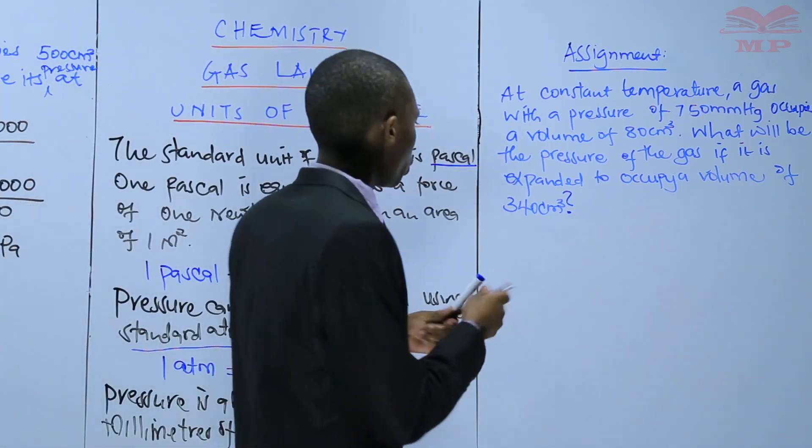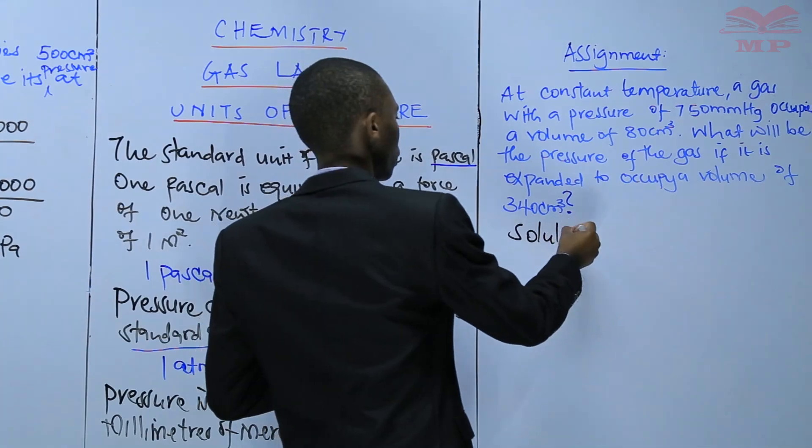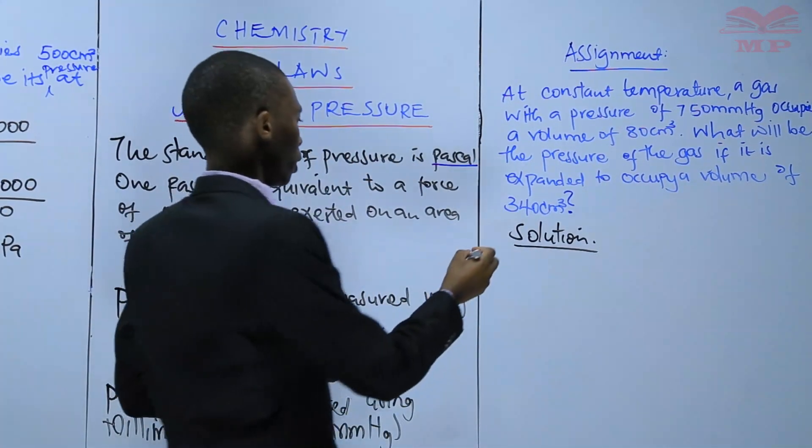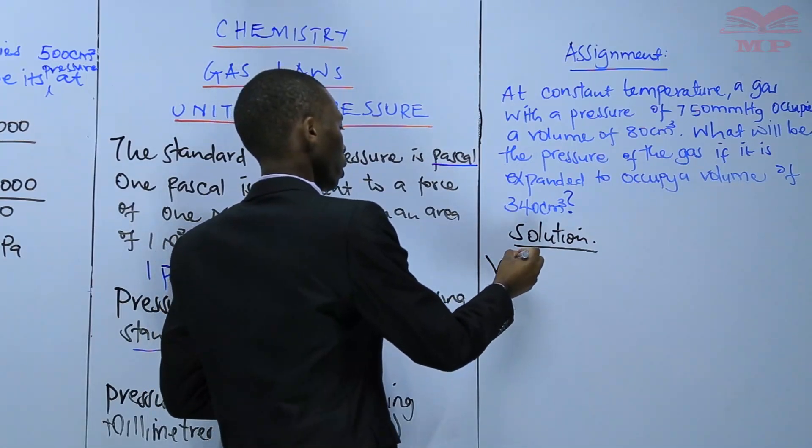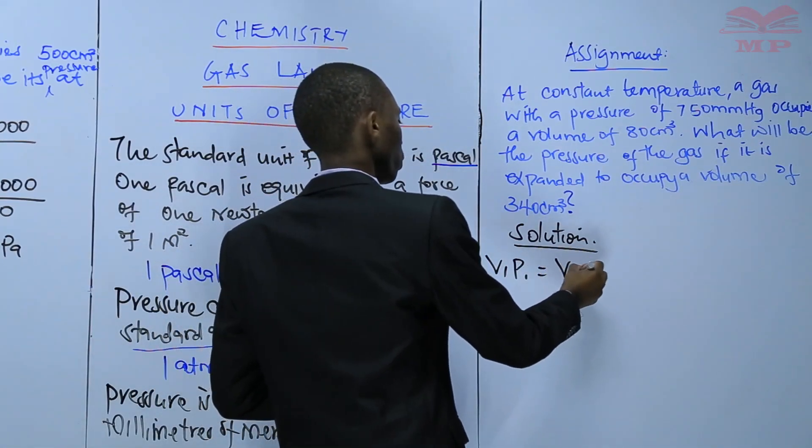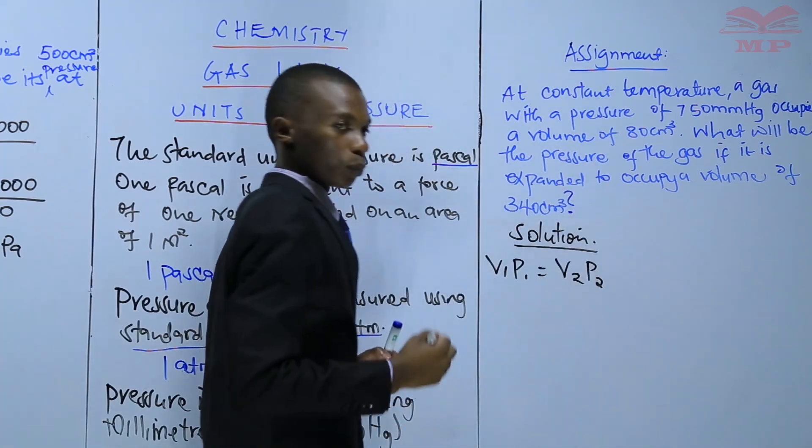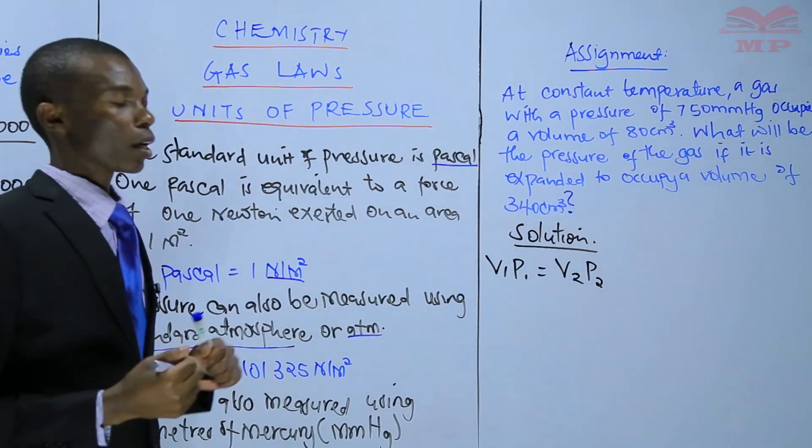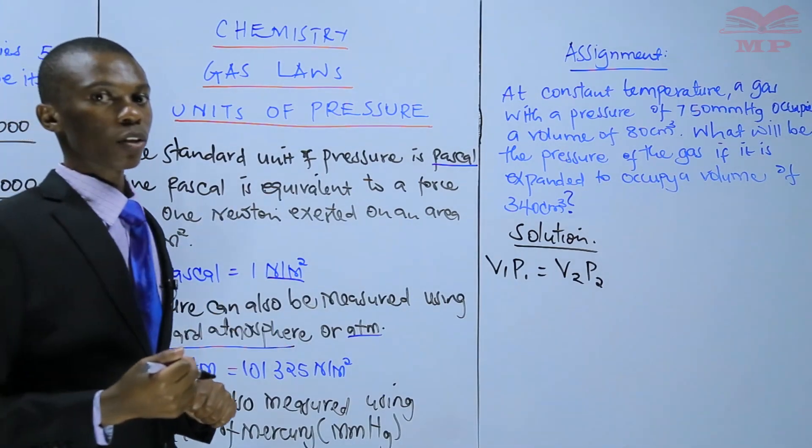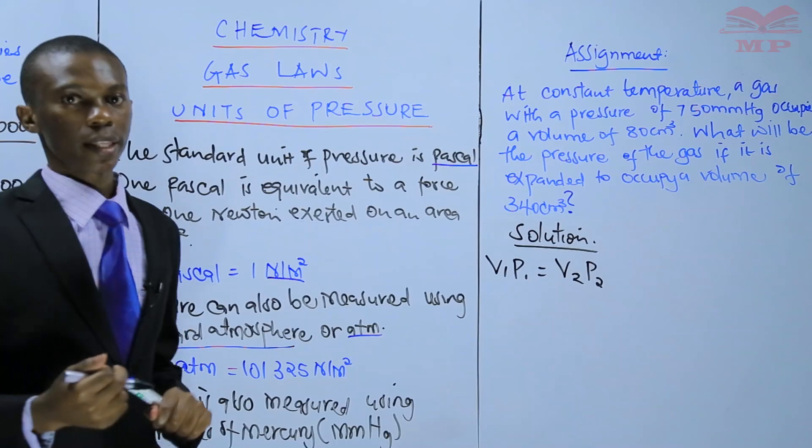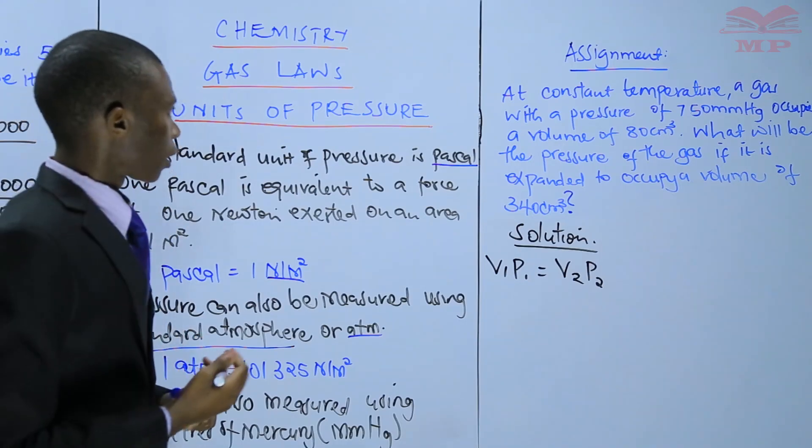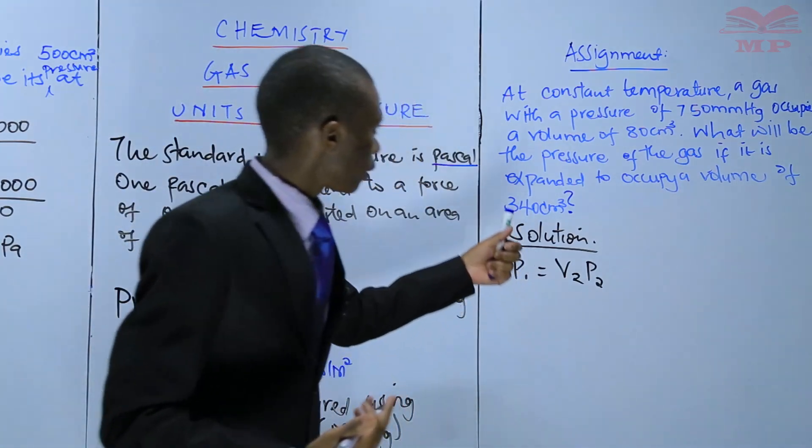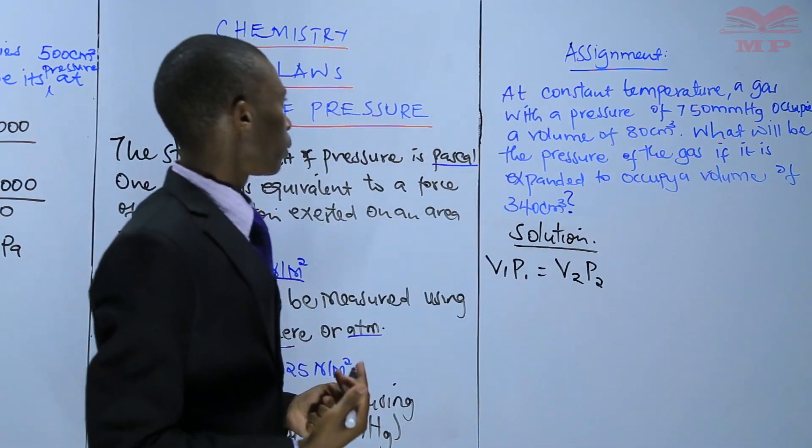Therefore, the solution will be: the expression is V1P1 equals V2P2, where V1 is the initial volume, P1 is the initial pressure, V2 is the final volume, and P2 is the final pressure. Therefore, we can substitute these values from what we have been given in the equation.